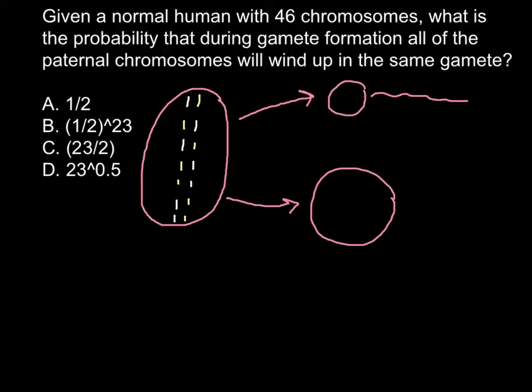This is the father's side and this is the mother's side. During metaphase, before division, these two sets of chromosomes line up in the middle of the cell randomly, and then they would be pulled to different parts of the cell. This is a totally random process.